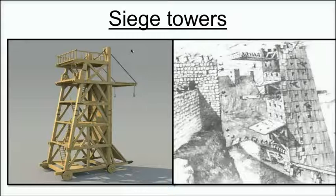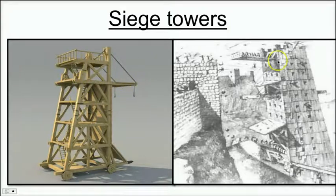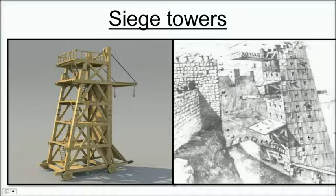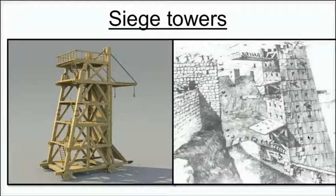Siege towers were very advanced and very difficult to build, but could also be very successful. Essentially, you'd put a bunch of men inside, wheel this protected structure over to the wall, put down a drawbridge, and walk right across onto the wall. A lot of times they used rawhide to protect the men from arrow fire or even fire itself. But if your siege towers caught on fire, there wasn't much you could do. So you would need multiple siege towers — building one usually wasn't going to be enough. You can imagine the manpower and resources required to build something like that.